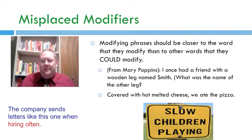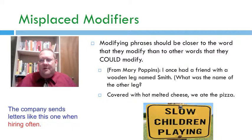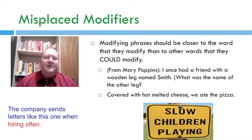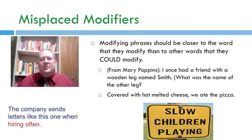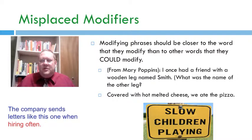A lot of jokes are based on misplaced modifiers. There's a famous line: 'I once had a friend with a wooden leg named Smith' — what's the name of the other leg? That's a misplaced modifier, because the wooden leg isn't named Smith, the friend is named Smith, but 'wooden leg' comes between 'friend' and 'Smith.' Or: 'Covered with hot melted cheese, we ate the pizza' — it reads as if we are covered with hot melted cheese, because 'we' is closer to the modifying phrase than 'pizza,' which it actually modifies.